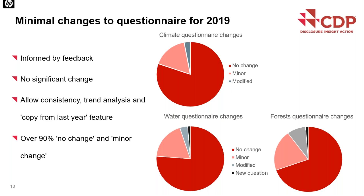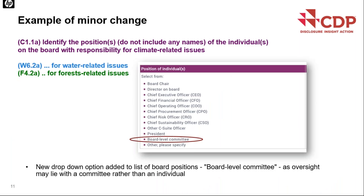Here's a brief example of a minor change. There's a cross-theme question appearing in the climate change questionnaire as well as water and forests, where you identify the position of the person on the board with responsibility for climate, water, or forest related issues — without needing to include names. For 2019, there's just an additional dropdown: 'board level committee' is now an option, which was something requested by many companies.